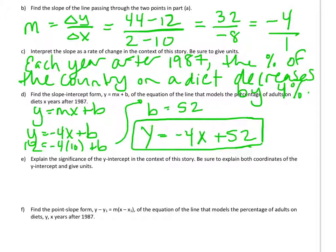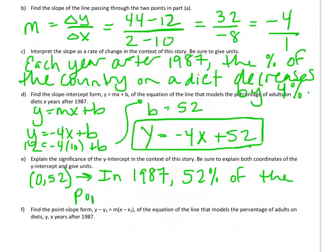Okay, so the significance of the y-intercept in the context of the story, the y-intercept is 52 or 0 comma 52, if you want to give both coordinates of the point. So that says that when x is 0, y is 52. And x represented years since 1987. So this says that in 1987, 52% of the population was on a diet.